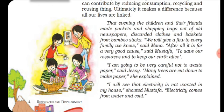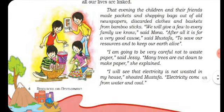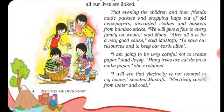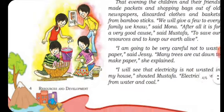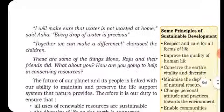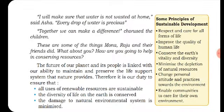I will see that electricity is not wasted in my house, shouted Mustafa. Electricity comes from water and coal. As we know, water is a renewable resource but coal is not — coal is not renewed quickly. So if coal runs out, electricity will not come to our homes if we are not careful.